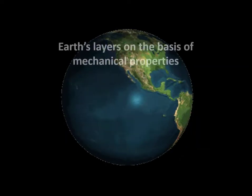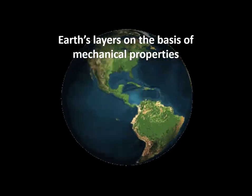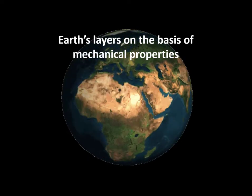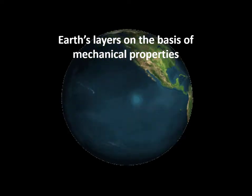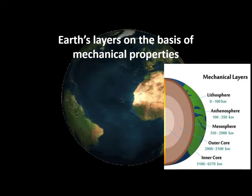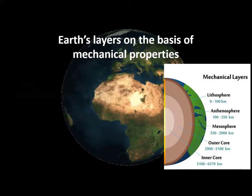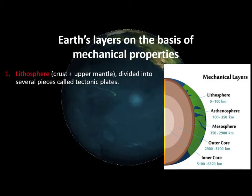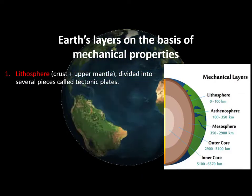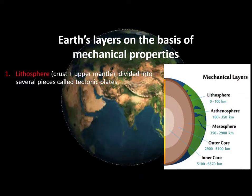If we consider the mechanical properties of Earth — including its strength, toughness, hardness, brittleness, malleability, plasticity, and ductility — we can divide Earth into five different layers. The first one, the lithosphere, is formed by the combination of crust and upper mantle and is divided into several fragments which we call tectonic plates.